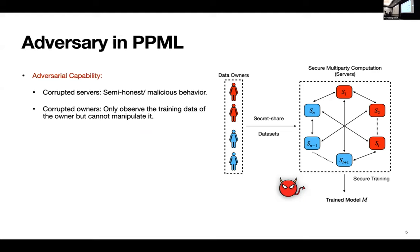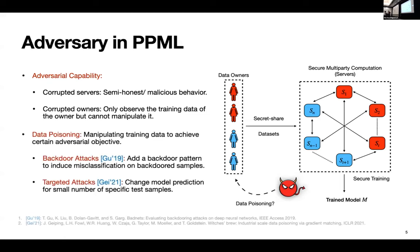Now let's talk about the adversarial capability in PPML. So here we see is that the adversary is able to corrupt servers as well as data owners. However, the power is disparate here. First, when it corrupts the servers, the corrupted servers can behave arbitrarily. They can either behave semi-honest or maliciously. But however, when the adversary corrupts the data owners, the adversary is not allowed to tamper with the data that these corrupted owners have. So what we question is, we challenge this threat model and figure out what if the adversary was actually able to manipulate the data sets of these corrupted owners?